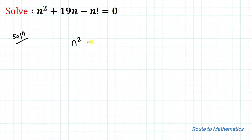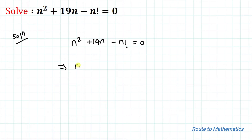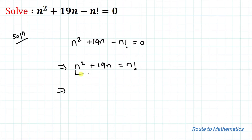We have given n² + 19n − n! = 0. In the next step, I'll take −n! to the right-hand side, so we have n² + 19n = n!.